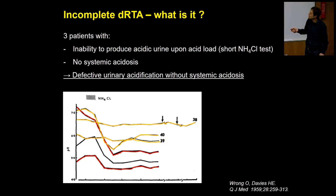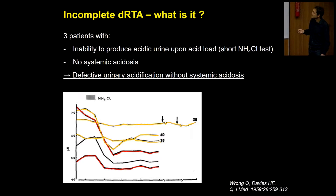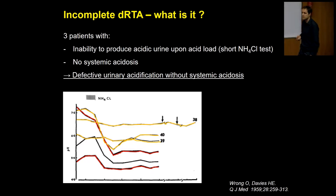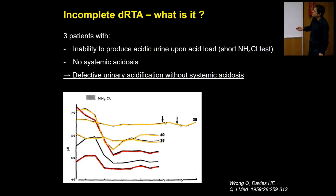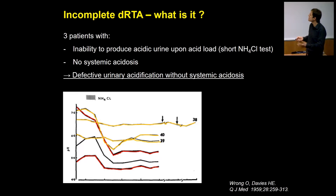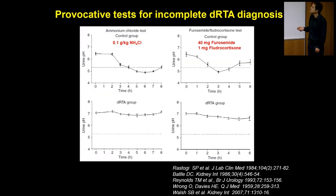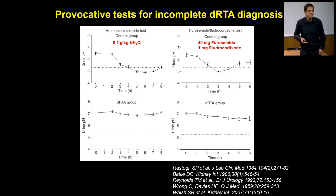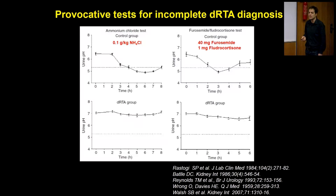The whole thing started when Oliver Wrong and Davis in 1959 studied the acidification capacity of healthy volunteers. They observed a certain margin, and then had three patients that couldn't acidify their urine even after repeated ammonium chloride loading. Based on this — I think there were 10 controls and the lowest was 5.28 — the arbitrary cutoff of 5.3 was established. The definition was defective urinary acidification without systemic acidosis, requiring provocative testing with ammonium chloride. Everybody who has done this knows patients don't like it — they get nauseated or get diarrhea.